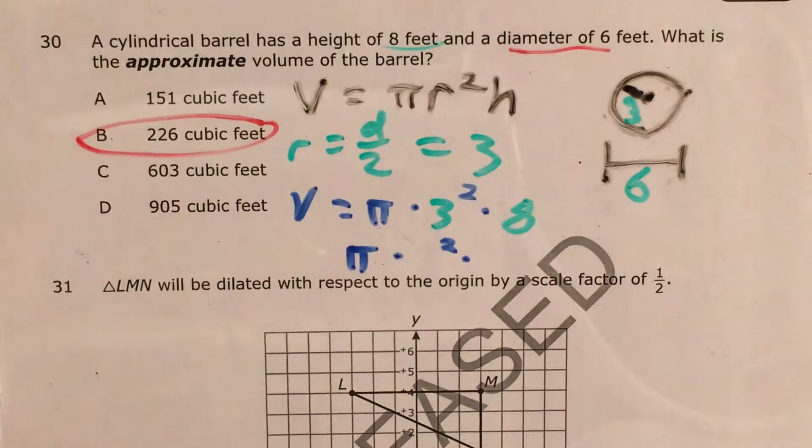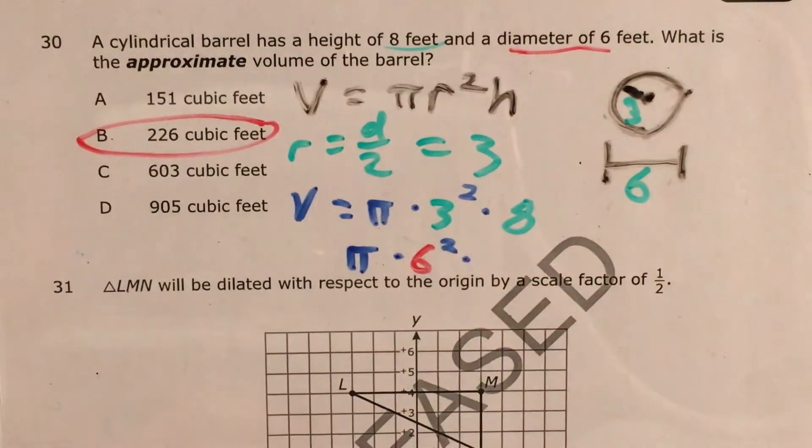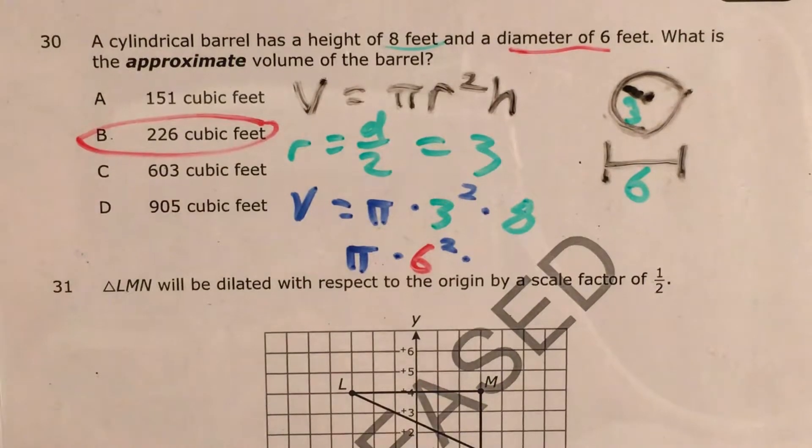Instead of pi times 3 squared times 8, I did the wrong thing and did pi times 6 squared times 8, forgetting to turn or to go from my diameter to my radius. What then?